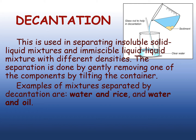Decantation is used in separating insoluble solid-liquid mixtures and immiscible liquid-liquid mixtures with different densities. The separation is done by gently removing one of the components by tilting the container. Examples of mixtures separated by decantation are water and rice, and water and oil. In the laboratory, we can also use a separatory funnel to separate immiscible liquid-liquid mixtures.